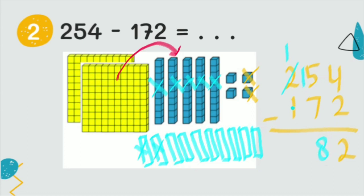One minus one is zero, so we don't need to write zero. The answer is eighty-two.